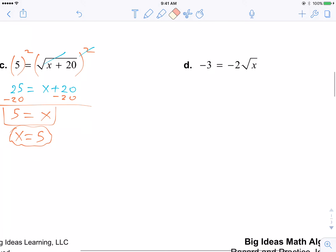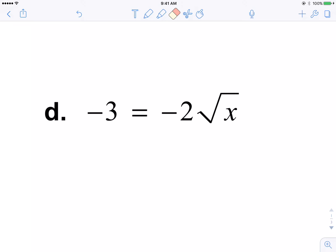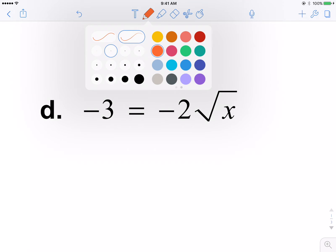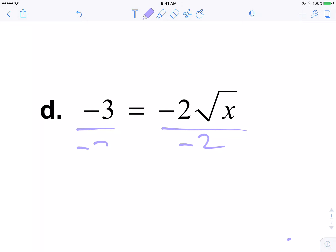Let me try to find a couple more. I guess this would be a good one. Here it's negative 2 times radical x. Isolate the radical. How do you isolate it? Well, you multiply them by 2, so divide by 2. Don't forget the negative sign.